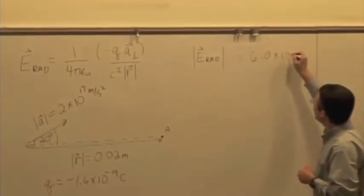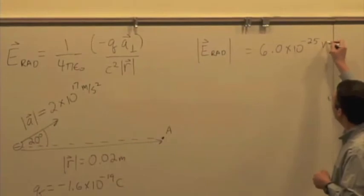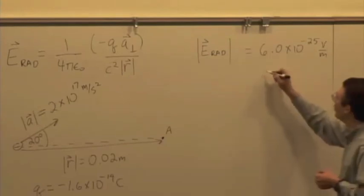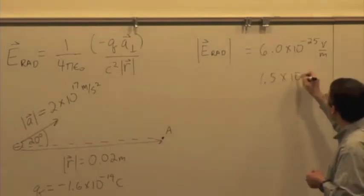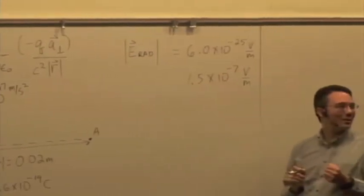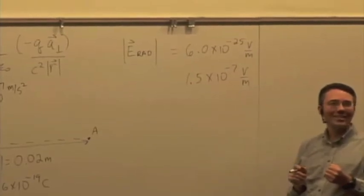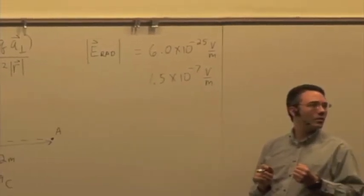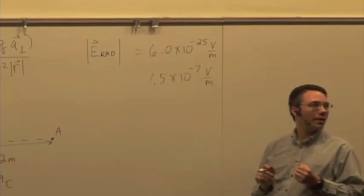6 times 10 to the negative 25 volts per meter. Agree? Disagree? What do we get? Okay, what are you getting? 1.5 times 10 to the negative 7 volts per meter. Any other possibilities? Any other candidates?